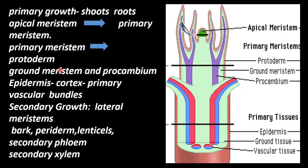The protoderm develops into epidermis. Ground meristome differentiates into cortex. Pro-cambium develops into primary vascular bundle — that is primary xylem and primary phloem. Then comes secondary growth, where the lateral meristome gives rise to secondary growth.